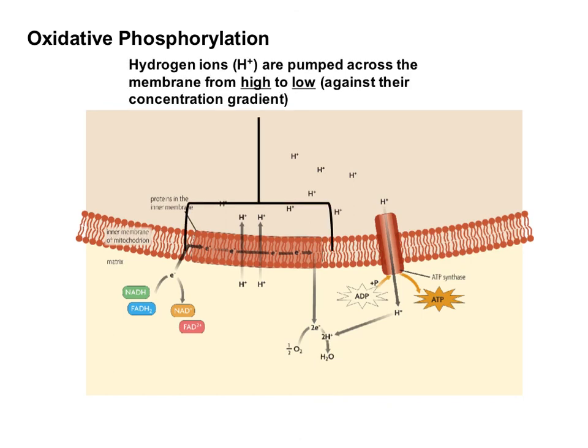A quick correction in this slide: that should say hydrogen ions are pumped across the membrane from low to high, against their concentration gradient. That is active transport.